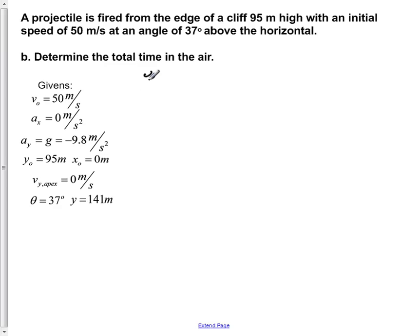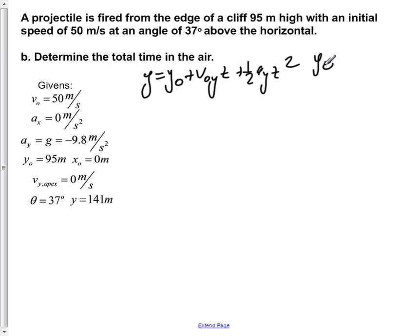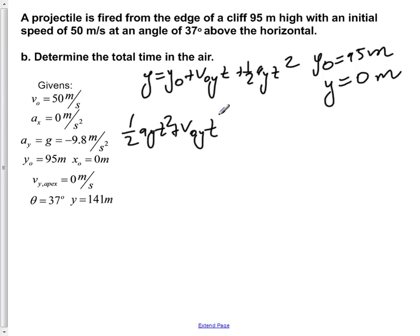Using the equation y = y₀ + v₀y·t + ½·Ay·t², we can solve for the total time. We know y₀ equals 95 meters and y equals 0 meters when it hits the ground. Rearranging gives ½·Ay·t² + v₀y·t + y₀ = 0, since the y term cancels to zero. This leaves us with one quadratic and one linear term in t.